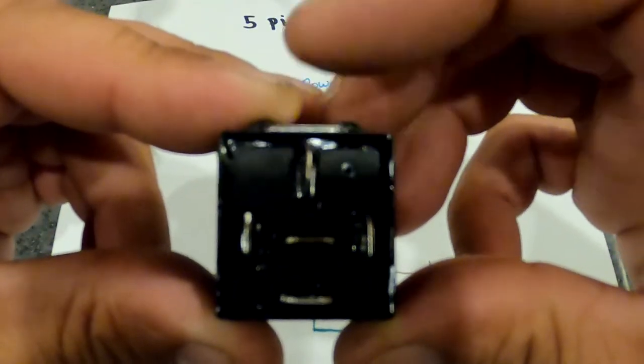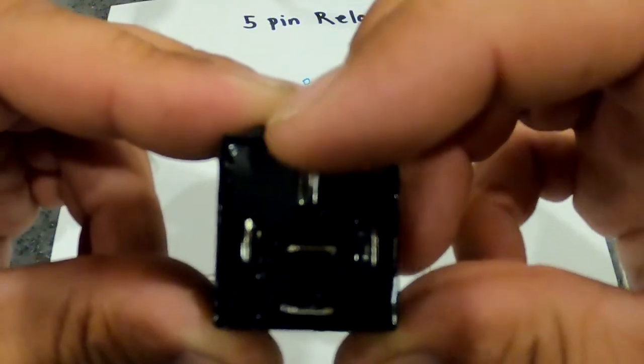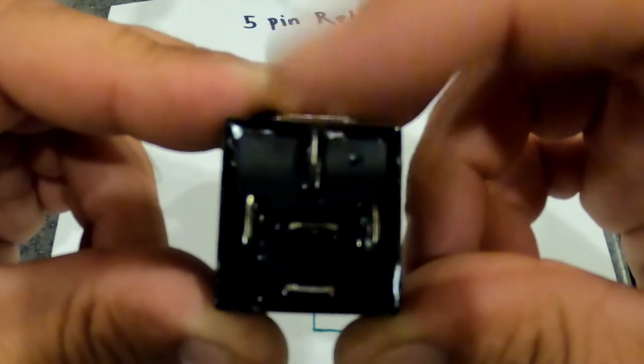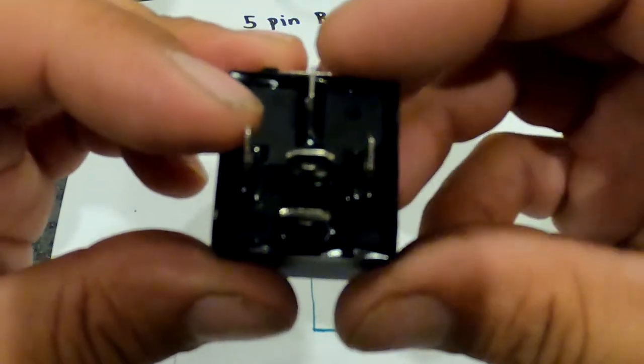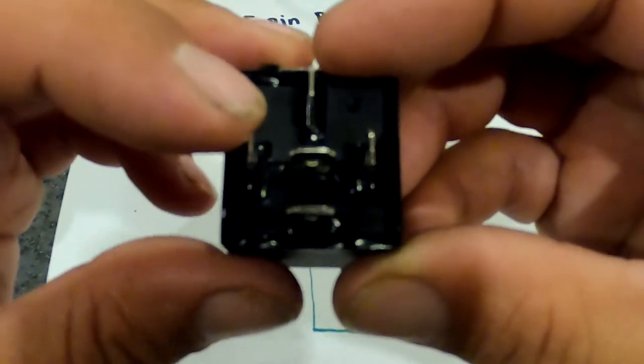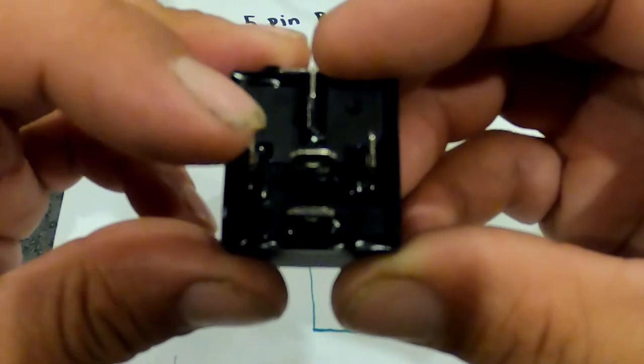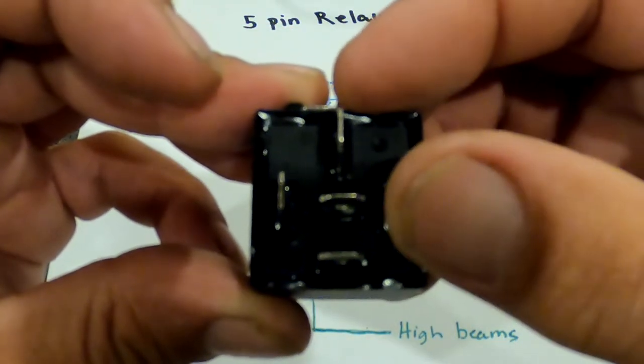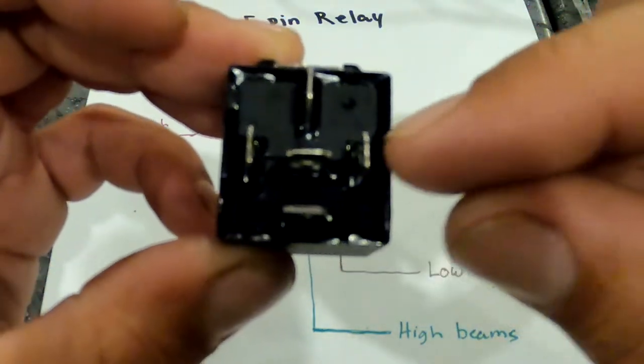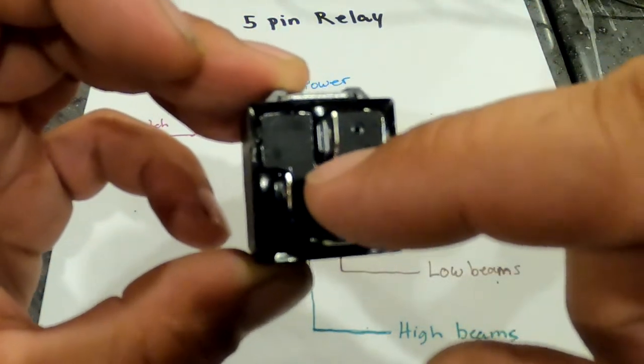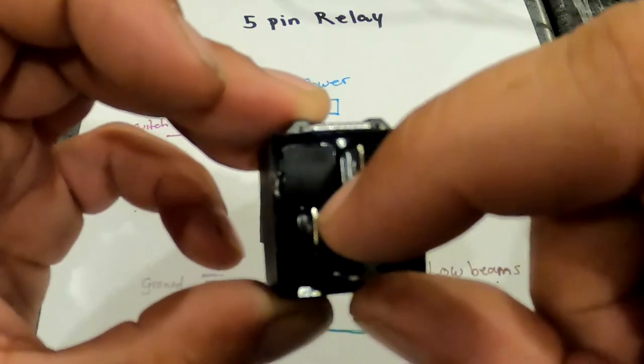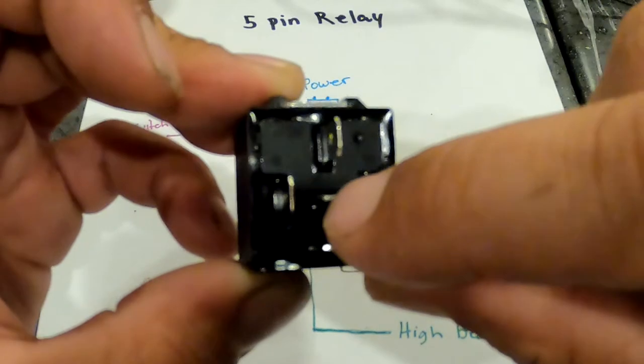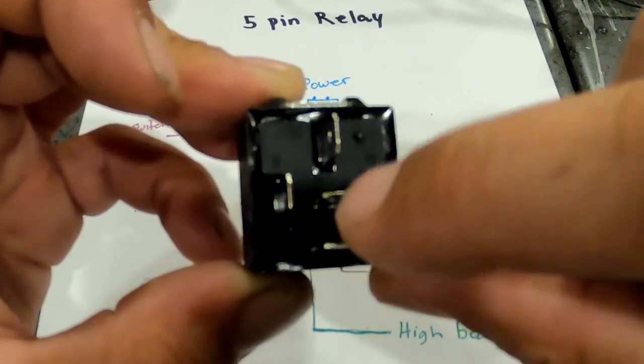So, what happens here is, this is pin 30. This comes from the battery, from your battery to fuse to this pin 30. Then, this one here is pin 85. That's your ground. You'll ground that to the car, to the chassis somewhere. This is 86. This is from your switch. The center one here is 87A. This will actually go to the low beams in the car, and I'll tell you why in a second.